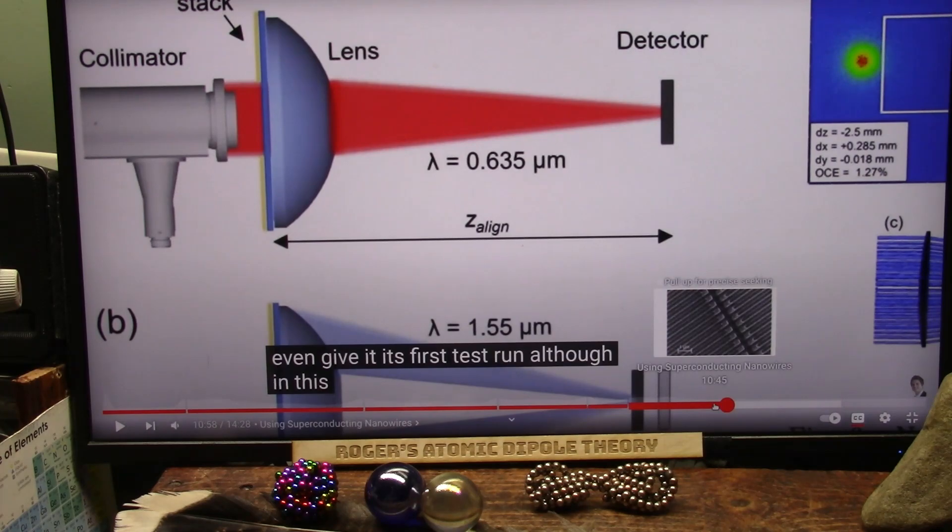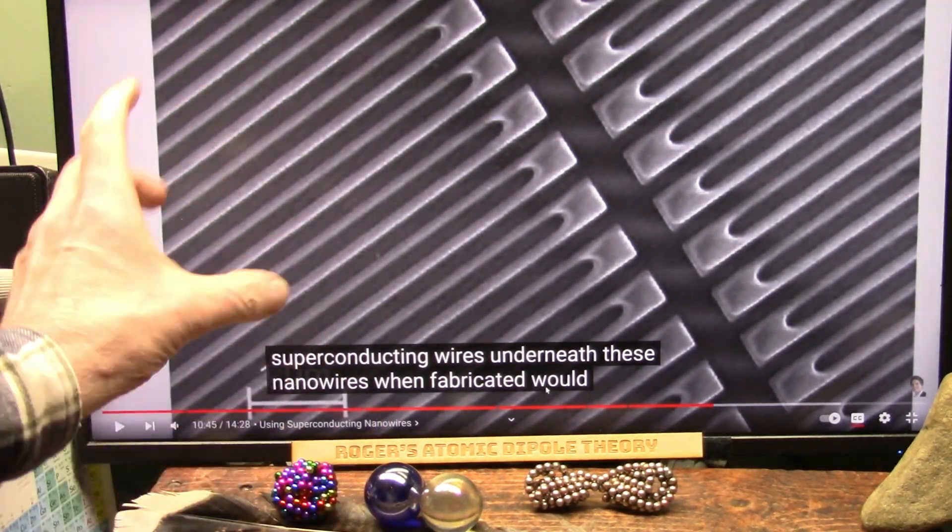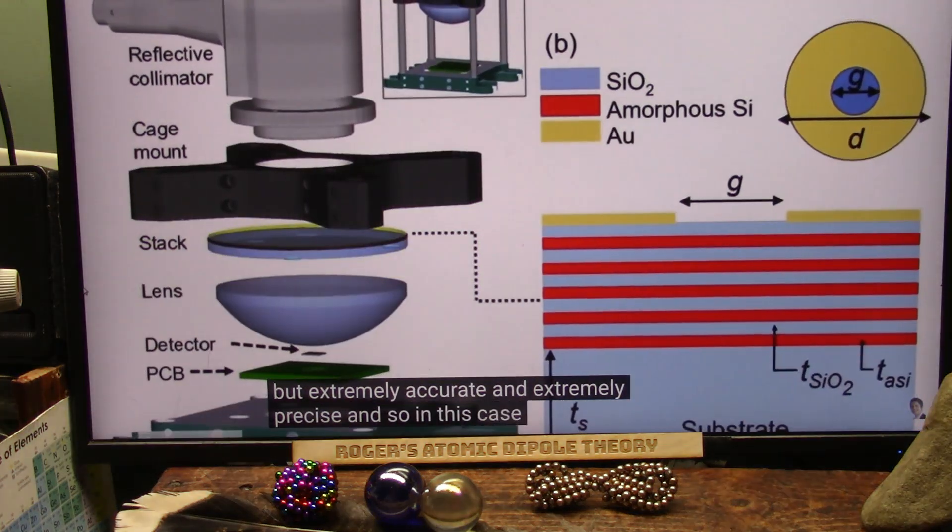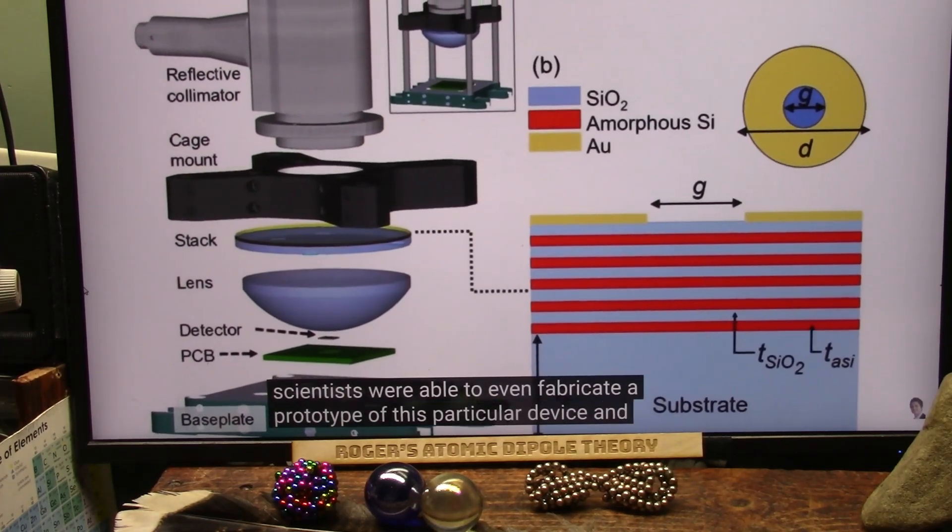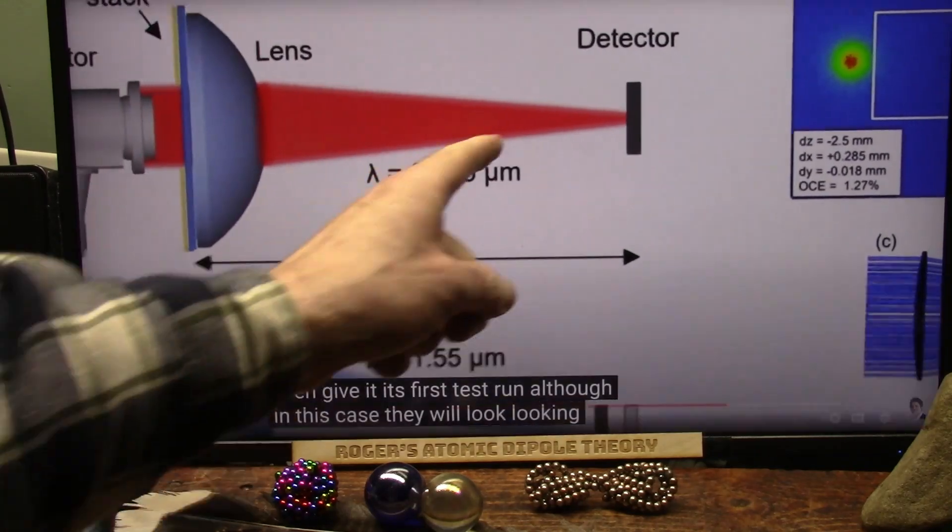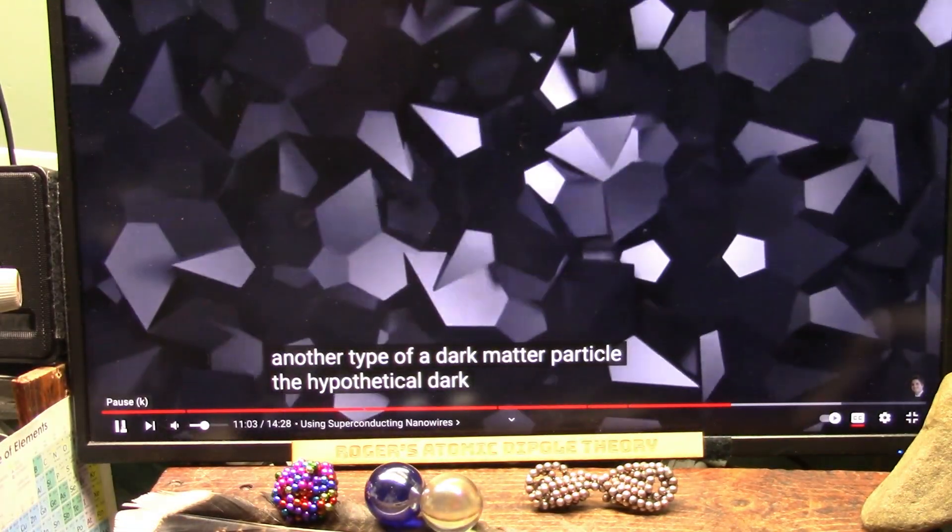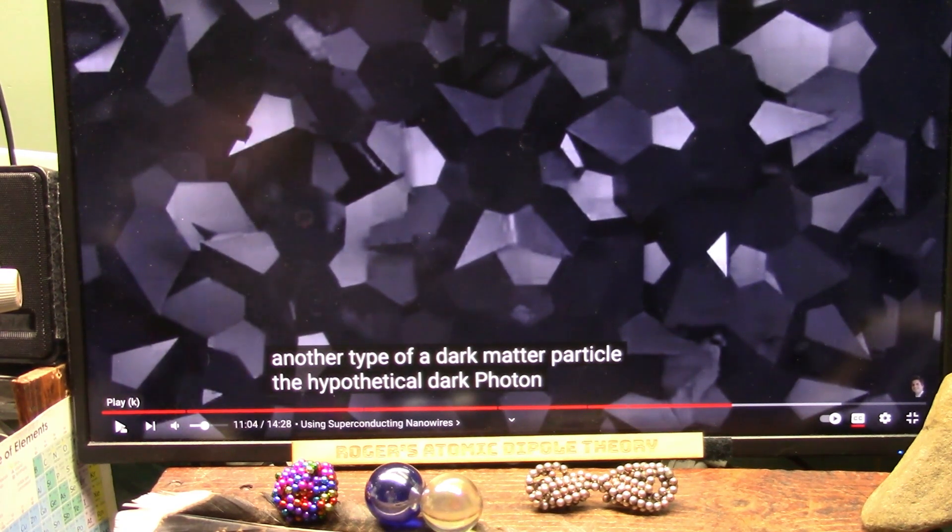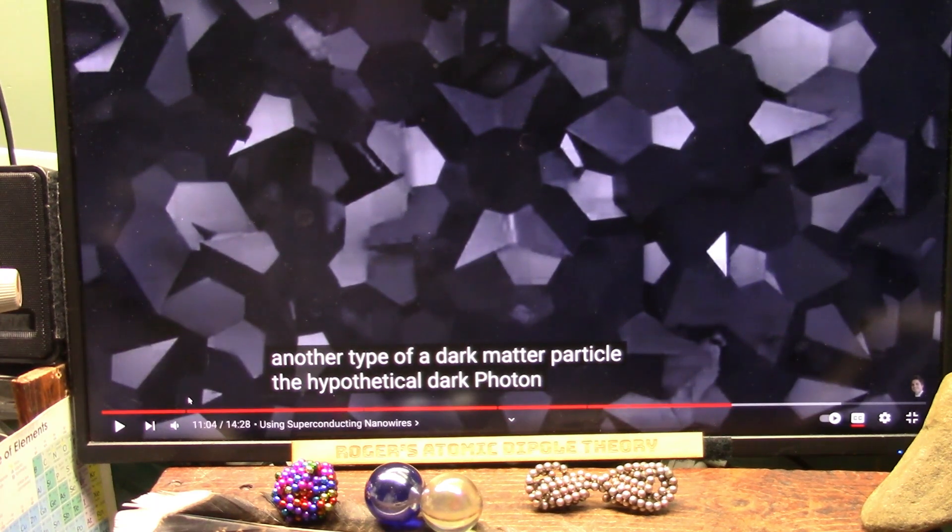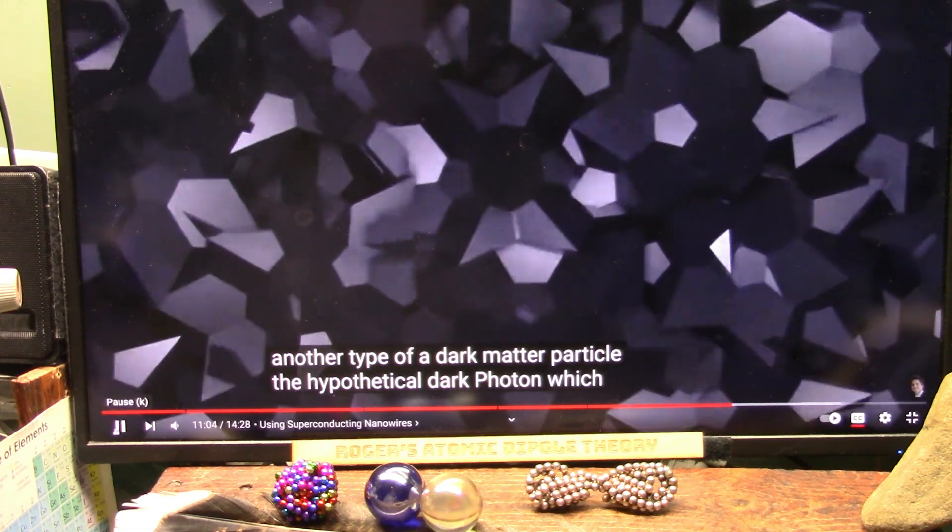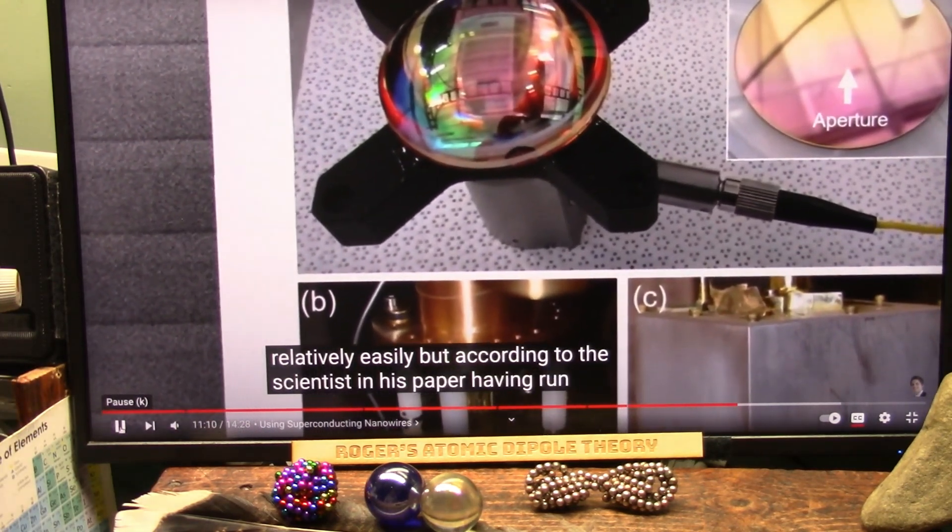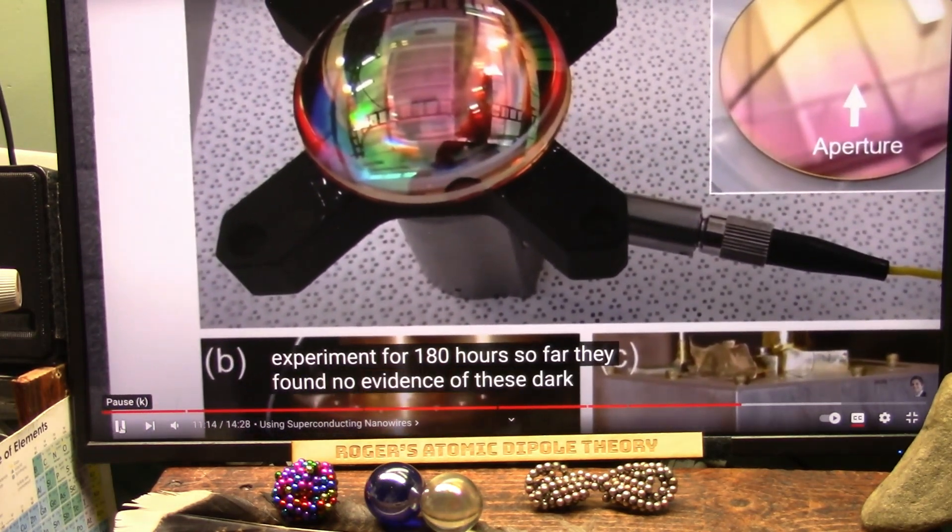Let's go back to make sure you understand what they're doing. They're putting that light through a very thin set of wires that are supposed to focus it. The scientists were able to even fabricate a prototype of this particular device and give it its first test run. They were looking for another type of dark matter particle, the hypothetical dark photon. Having run this experiment for 180 hours, so far they've found no evidence of these dark photons existing.